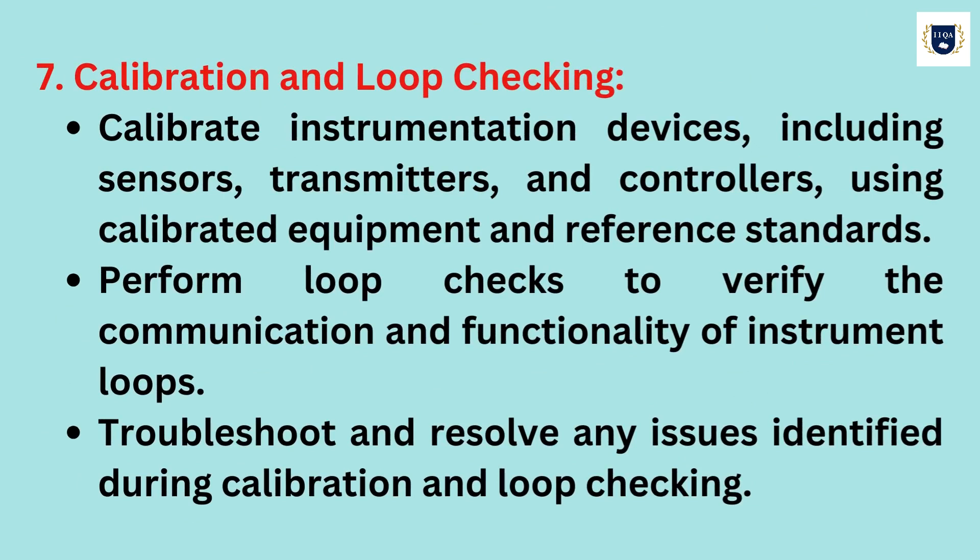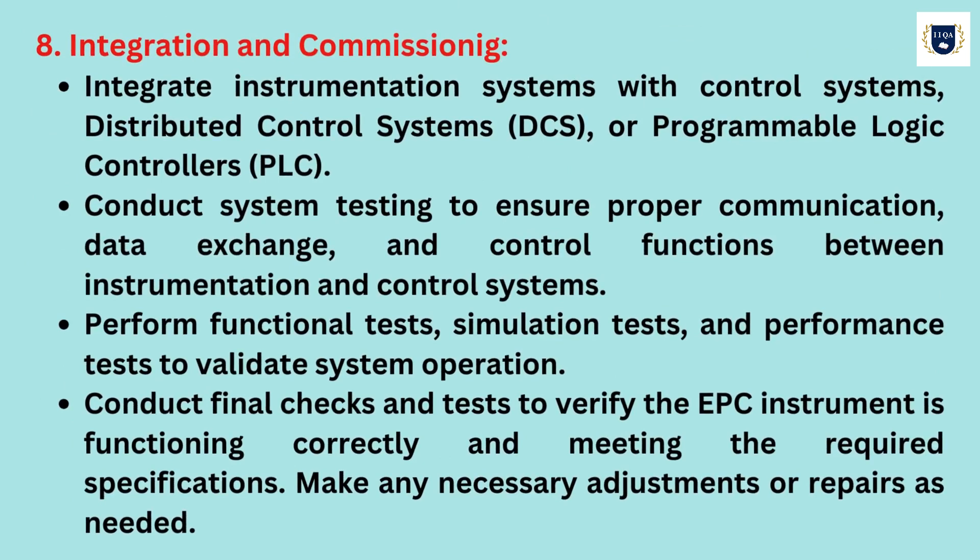Step 7: Calibration and Loop Checking. Calibrate instrumentation devices, including sensors, transmitters and controllers using calibrated equipment and reference standards. Perform loop checks to verify the communication and functionality of instrument loops. Troubleshoot and resolve any issues identified during calibration and loop checking.